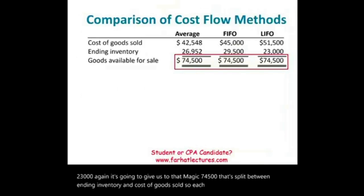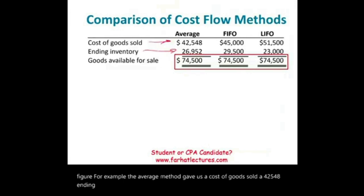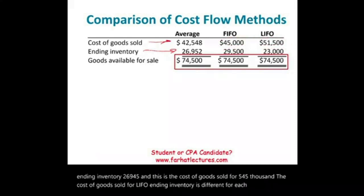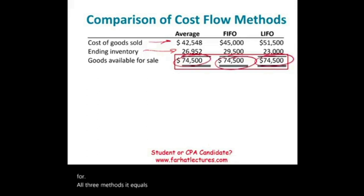Each method gave us a different figure. The average method gave a cost of goods sold of $47,548 and ending inventory of $26,952. FIFO gave cost of goods sold of $45,000 and ending inventory of $29,500. LIFO gave cost of goods sold of $54,500 and ending inventory of $20,000. However, for all three methods, adding cost of goods sold and ending inventory always equals $74,500 — the same goods available for sale split three different ways.